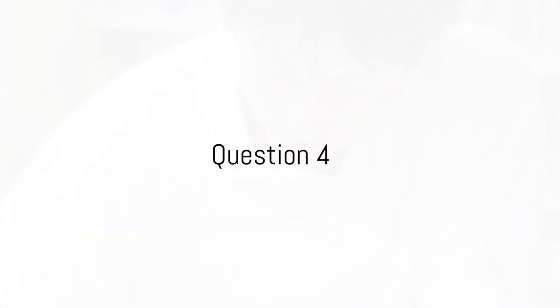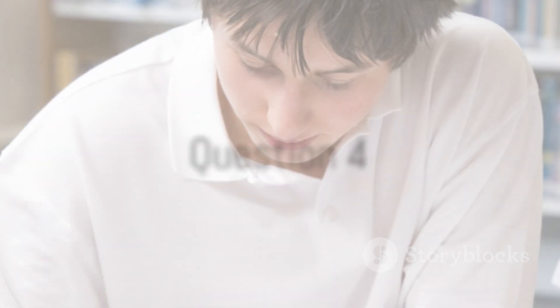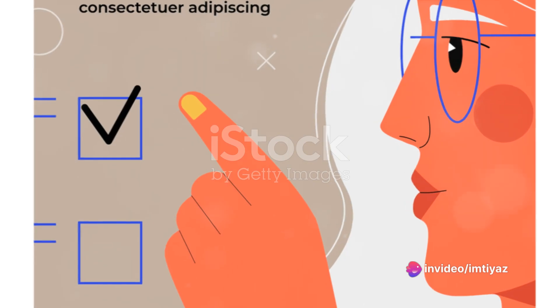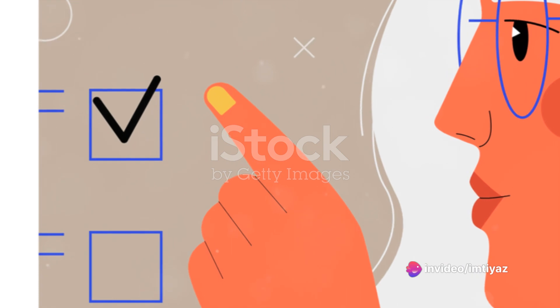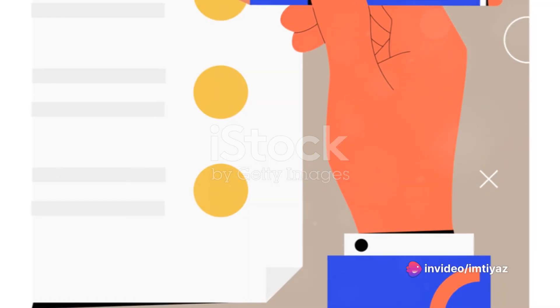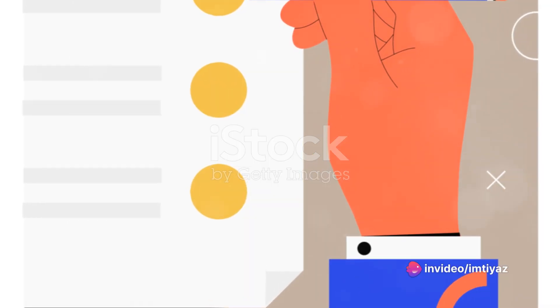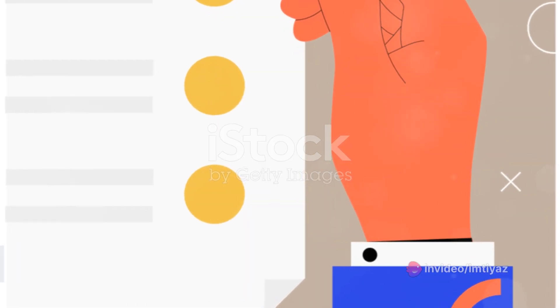We're at Question 4 now. What is the minimum residency period in India for someone to apply for citizenship by naturalization? Is it A. 5 years, B. 7 years, C. 10 years, or D. 12 years? The answer is C. 10 years.